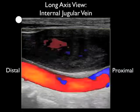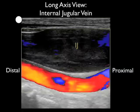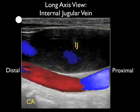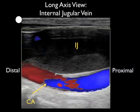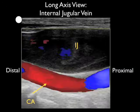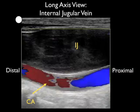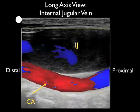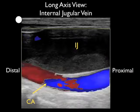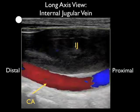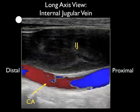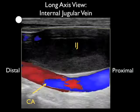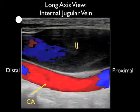Here's a video clip, again a long axis configuration in a different patient, and here we see a much more distended internal jugular vein that's lying on top of the carotid artery. Notice the swirls of blood in the internal jugular vein showing the course of blood flow from high within the neck to the left, to low within the neck here to the right.